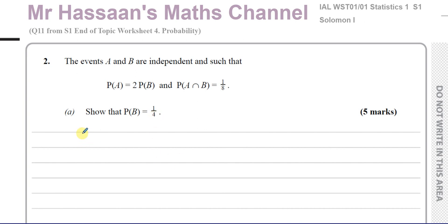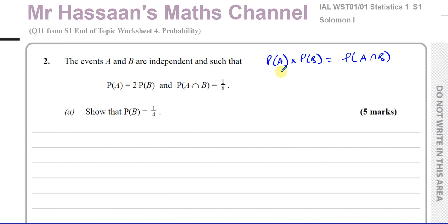We're told that the probability of A and B are independent. That gives us the idea that the probability of A multiplied by the probability of B equals the probability of A intersection B. That's only true if the events are independent, which means the probability of B occurring is not affected by the probability of A having occurred before it. So they're independent of each other — one doesn't affect the probability of the other.